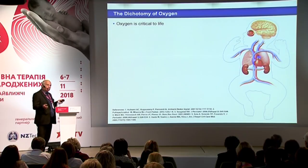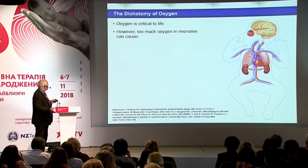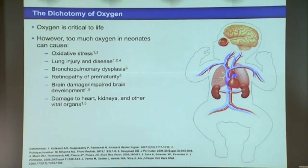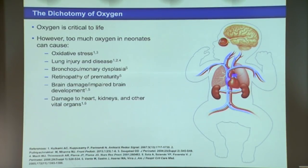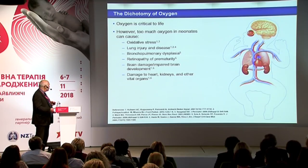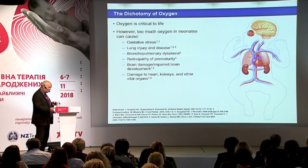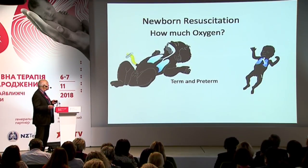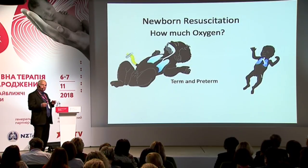We all know that oxygen is critical to life, but too much oxygen in the newborn can cause a number of ill effects: oxidative stress, lung injury, other diseases, bronchopulmonary dysplasia, ROP, brain damage or impaired brain development. We also know that it can damage the heart, kidneys, and other vital organs. So let's go directly to the delivery room.